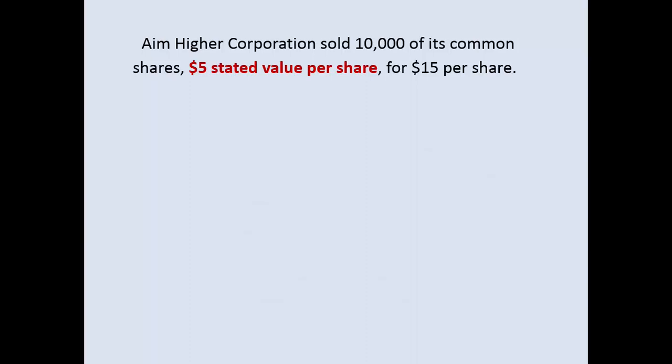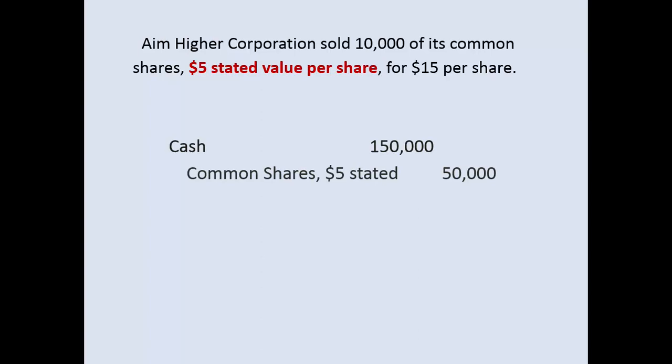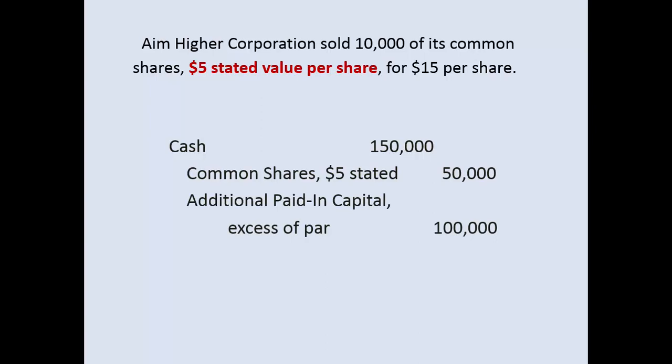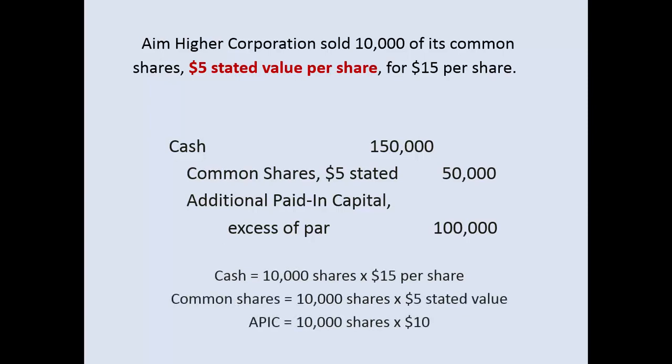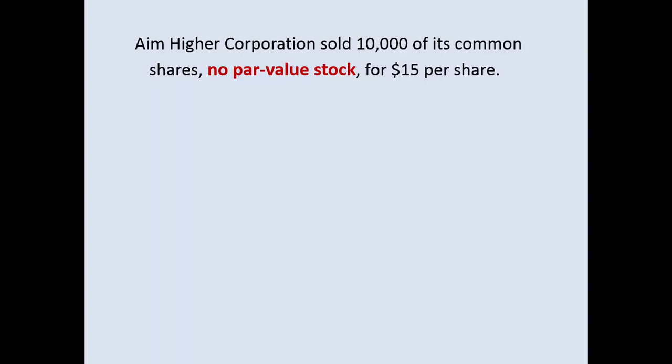Another example: instead of par value, the corporate charter has a stated value. Cash comes in, only this time the stated value is $5 a share, and you record additional paid-in capital, excess of stated value. If the corporation has no par value stock, you won't have an additional paid-in capital excess of par account. A stated value comes into play when a corporation initially set no par and then later decided to set a stated value after the corporate charter was obtained. But really, in the corporate charter, it will either say a par value or no par value.